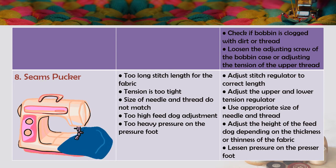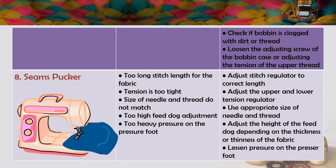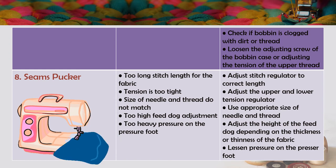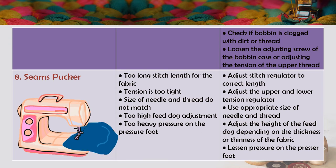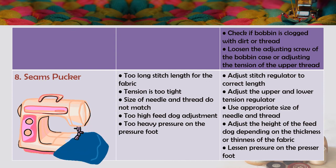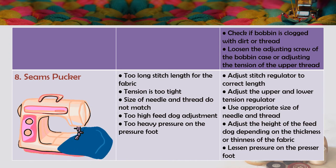Additional remedies for lower thread breaks: check if bobbin is clogged with dirt or thread, loosen the adjusting screw of the bobbin case, or adjust the tension of the upper thread. The next machine trouble is seam packer. Causes: too long stitch length for the fabric, tension too tight, needle and thread size do not match, too high feed dog adjustment, or too heavy pressure on the presser foot. Remedies: adjust stitch regulator to correct length, adjust upper and lower tension regulators, use appropriate needle and thread size, adjust the height of the feed dog depending on fabric thickness, and loosen pressure on the presser foot.